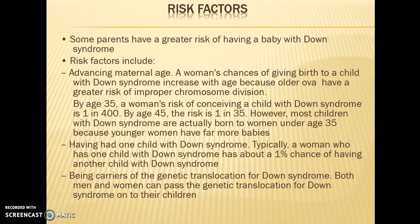As a woman's age increases, the age of her ovaries and ova also increase, raising the risk of Down syndrome. By age 35, a woman's risk of conceiving a child with Down syndrome is 1 in 400; by age 45, it is 1 in 35. However, most children with Down syndrome are actually born to women under the age of 35, because younger women have far more babies overall.